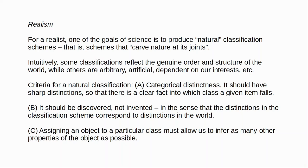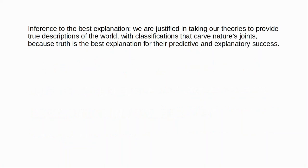Dupré's three desiderata usefully summarise the traditional realist view of natural kinds — this is what is required of a natural classification scheme. So why should we believe that there are natural kinds? How do we justify the claim that a given classification scheme is natural? Among scientific realists, there's a general consensus in favour of a naturalist approach: if anything provides access to the natural kinds, it's science. If natural classification schemes are to be found anywhere, it's within our best scientific theories, so our philosophical account of natural kinds must accommodate the results of the sciences.